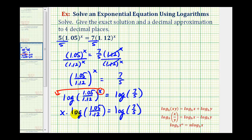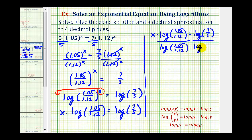And now we can solve for x by dividing both sides of the equation by this logarithm here. Notice on the left side of this equation, this simplifies to one, so we're left with x equals the quotient of these two logarithms here, which would be the exact value of x. So we have log seven-fifths divided by the log of 1.05 divided by 1.12. So this would be one way to express the exact value of x that would satisfy the given exponential equation.